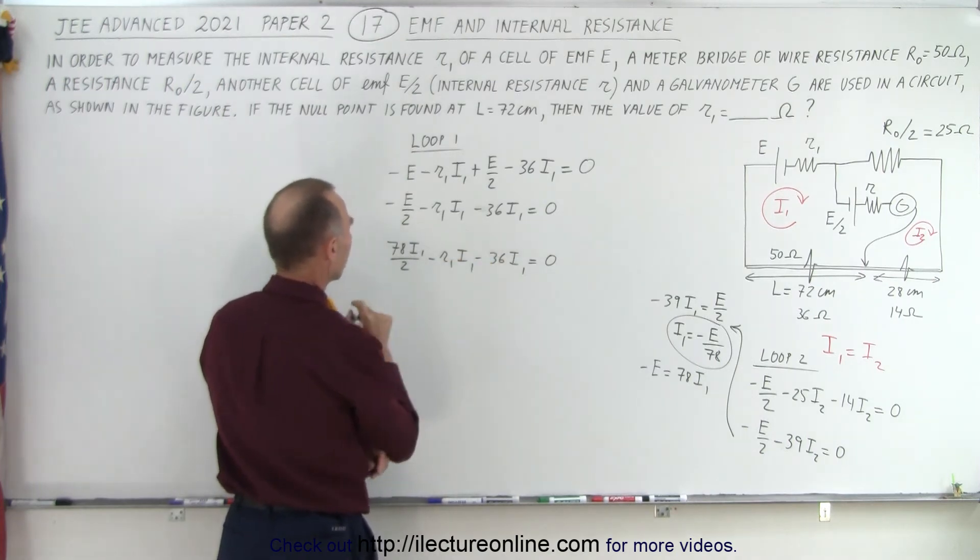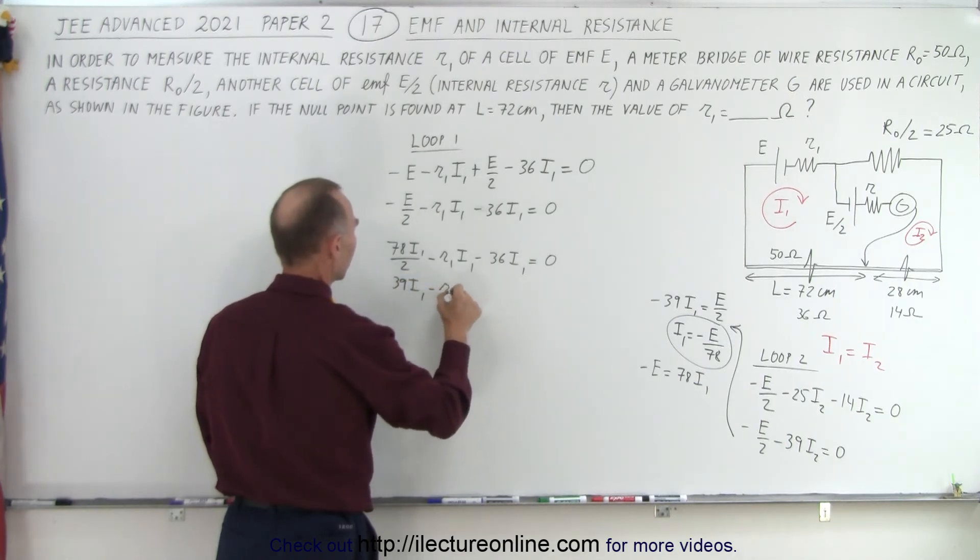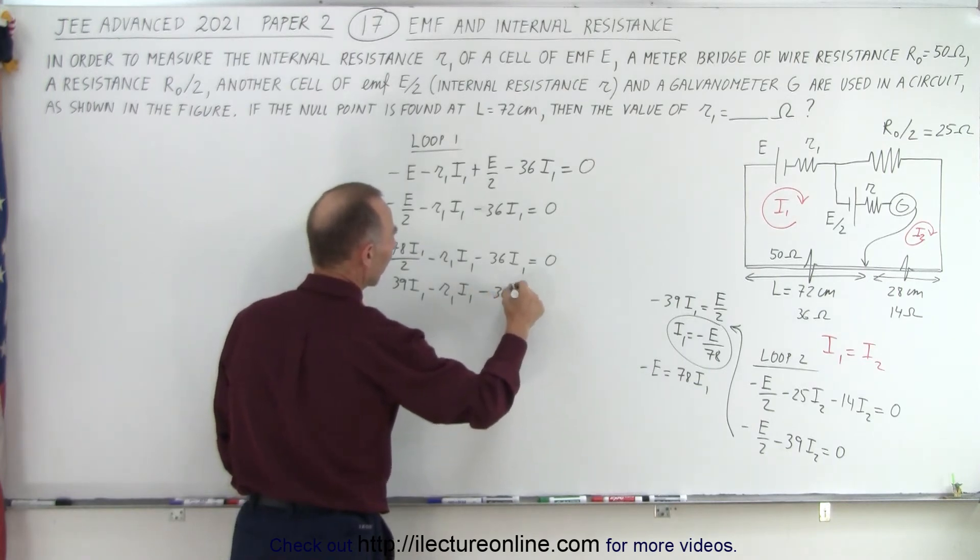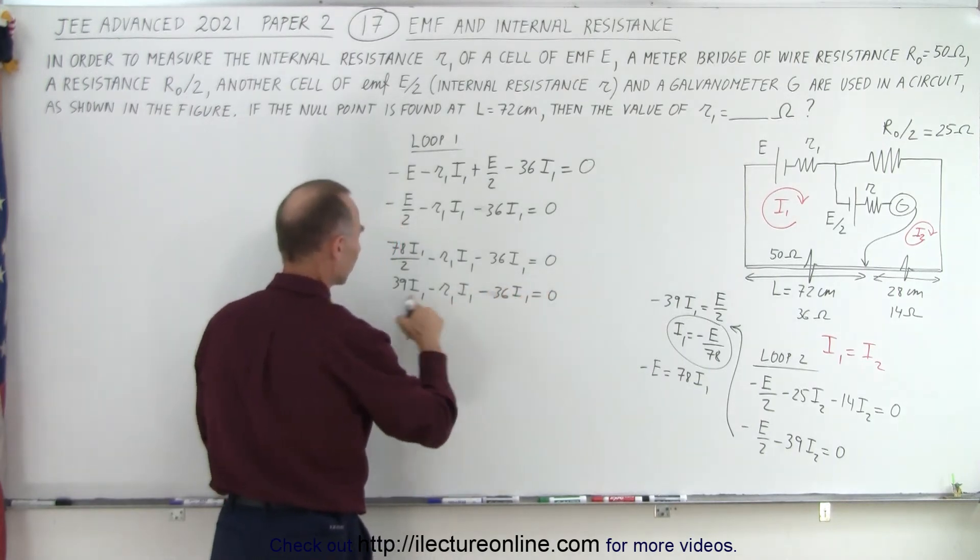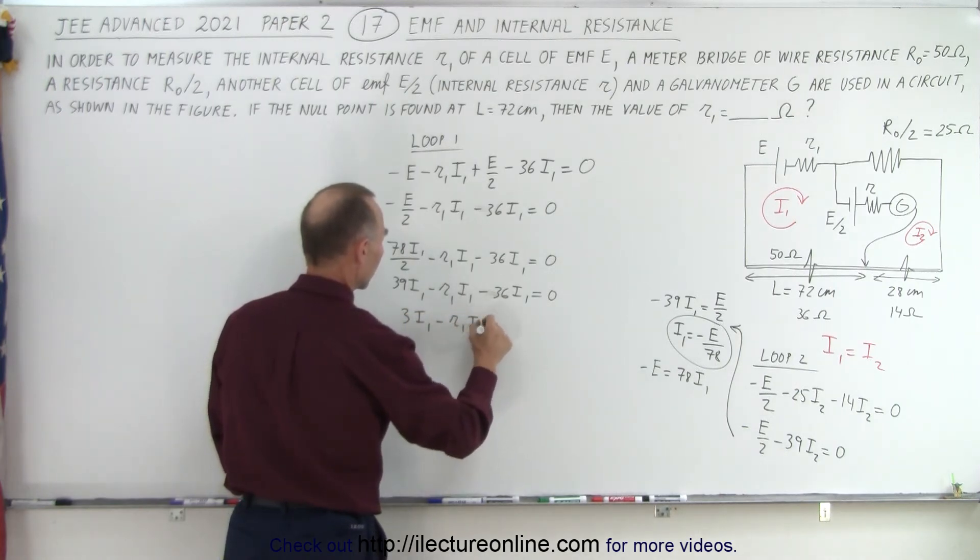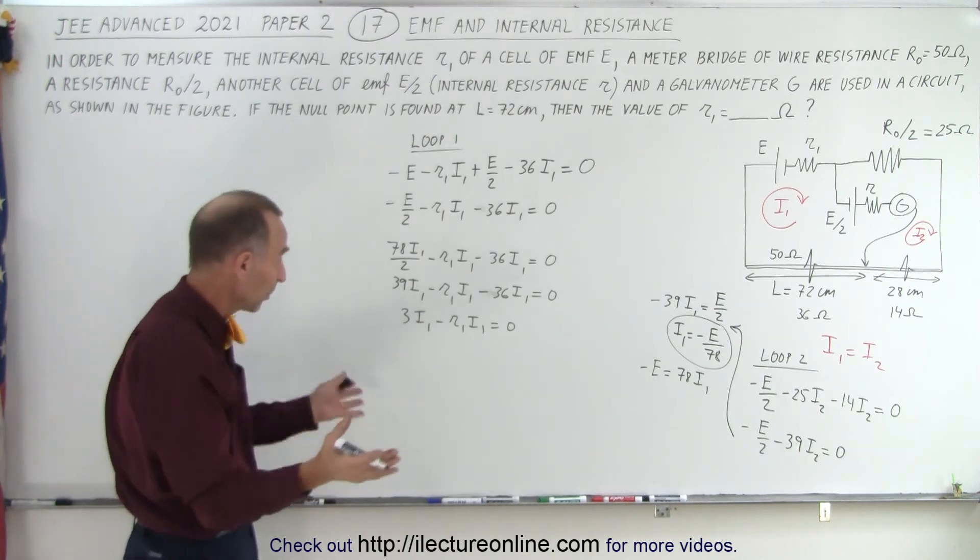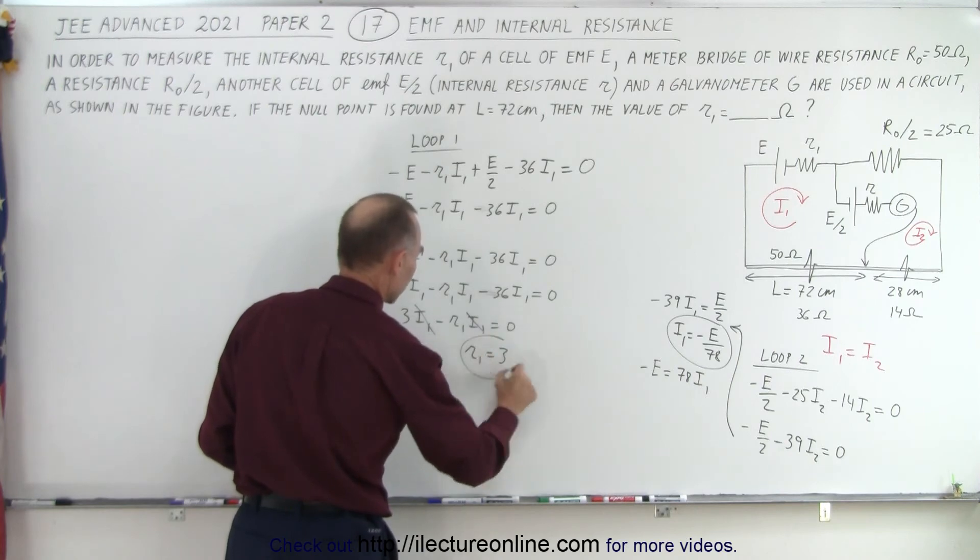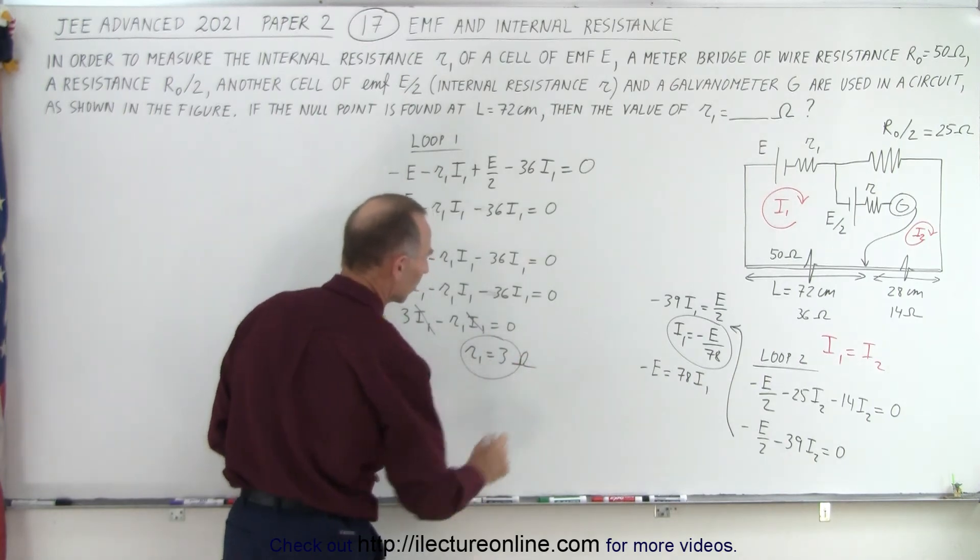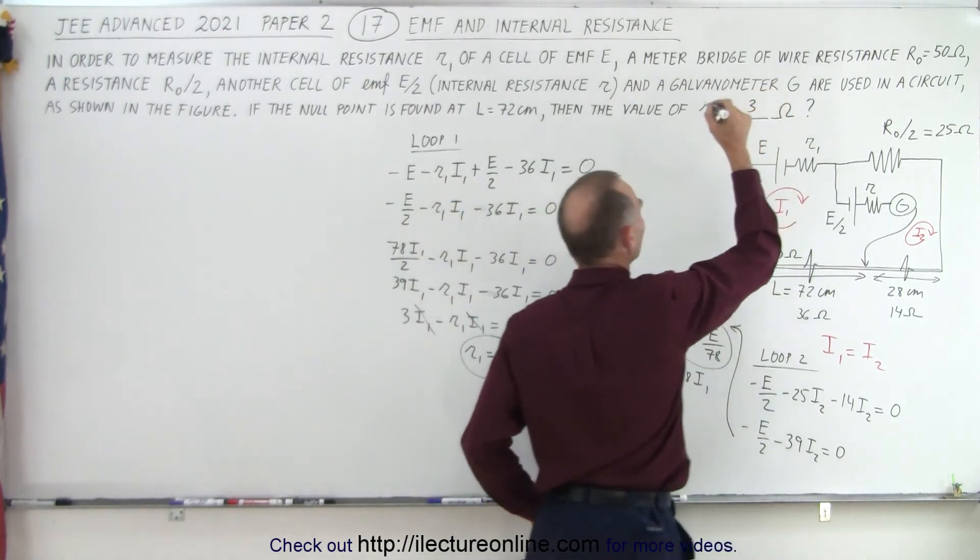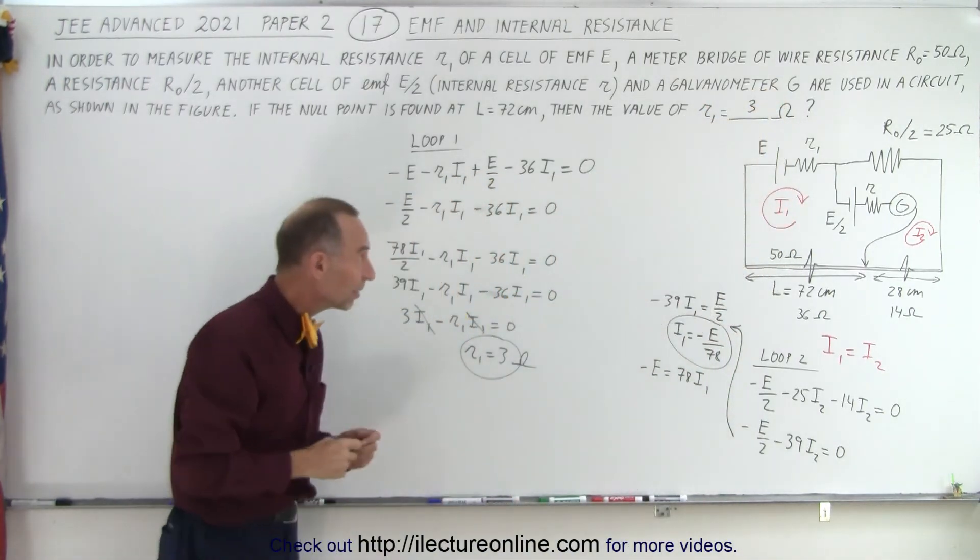Then this becomes 39, so I have 39I1 minus R1I1 minus 36I1 equals zero. Subtracting, I get 3I1 minus R1I1 equals zero. So now you can see that I1s can simply be cancelled out. And so now I have R1 equals 3, and of course that's in terms of ohms. That means our answer is that the internal resistance for cell 1 is equal to 3 ohms.